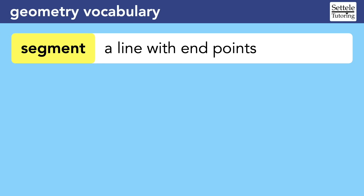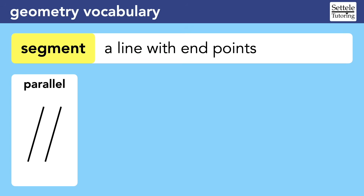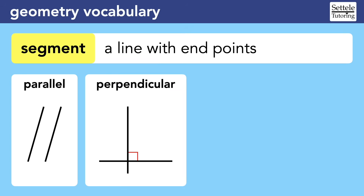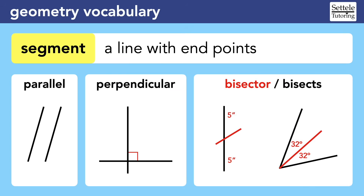Technically, a line goes on forever in both directions. A line segment has endpoints. When the SAT talks about a segment, they basically just mean a line. As you know, lines can be parallel, meaning that they move in the same direction, or they can be perpendicular, which means that they form a right angle. A line that cuts something in half is known as a bisector — a bisector bisects another line or an angle.